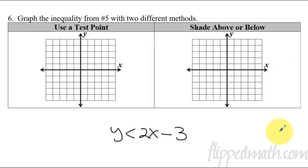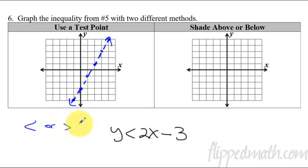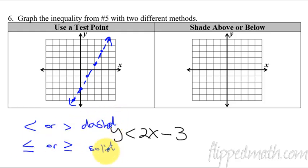Next up, we're going to graph this thing. Y is less than 2x minus 3. Let's graph this using two different methods. First, get the line: y-intercept negative 3, slope up 2 over 1, giving a positive slope going up. Now because it just says less than, we're going to do a dashed line — make sure it's not completely solid, it needs to be dashed. In your notes: if you see a less than or greater than symbol, that is a dashed line. But if you see less than or equal to, or greater than or equal to, then it's going to be a solid line.